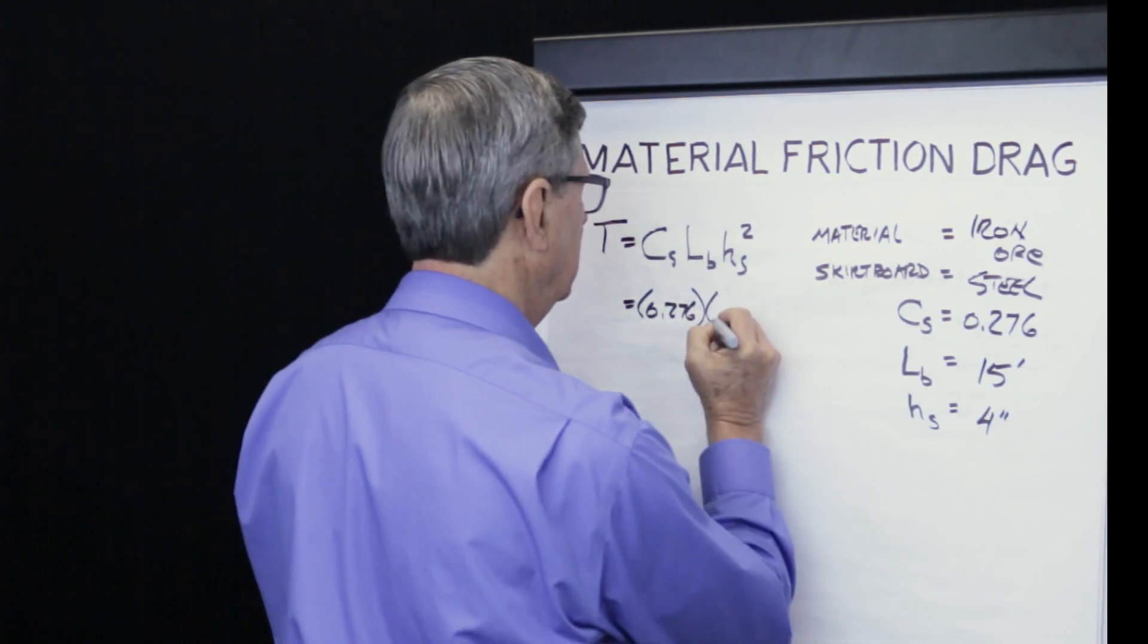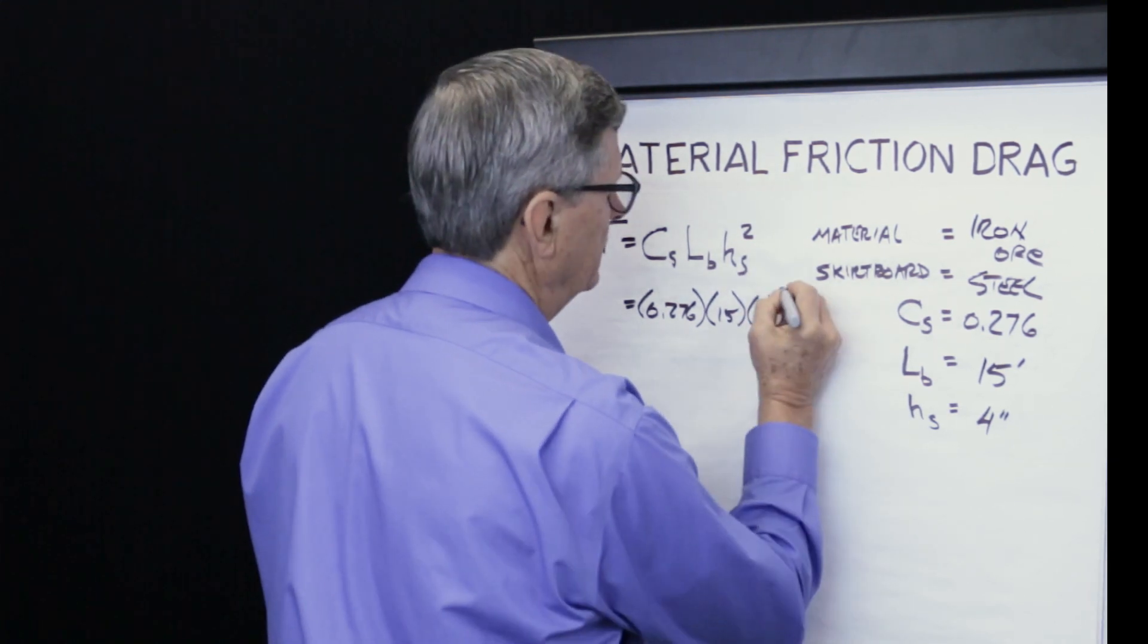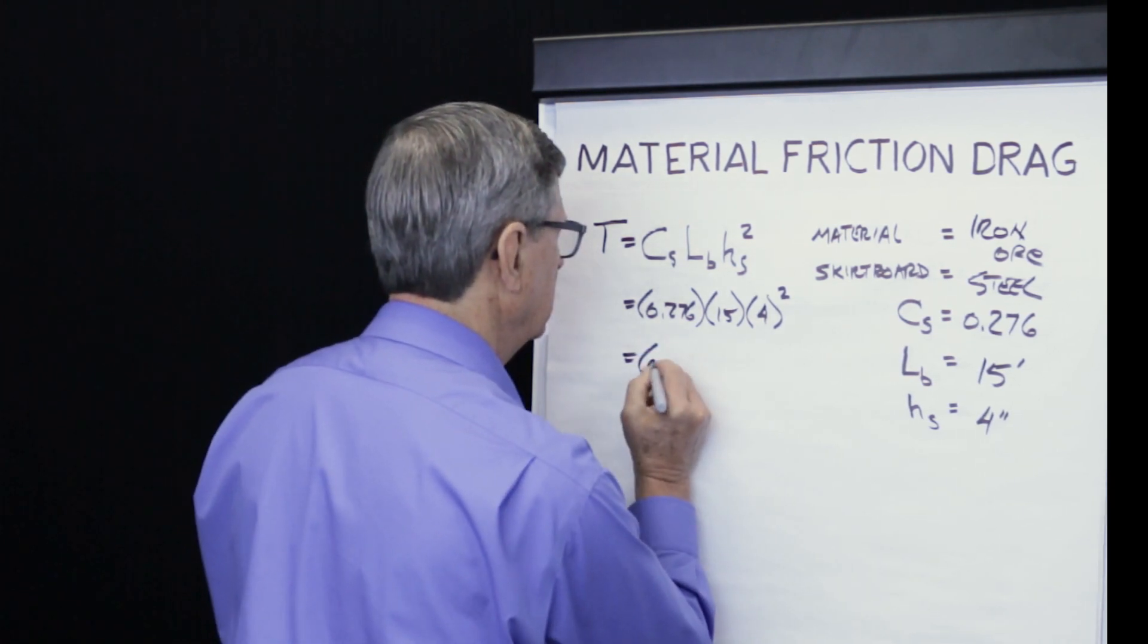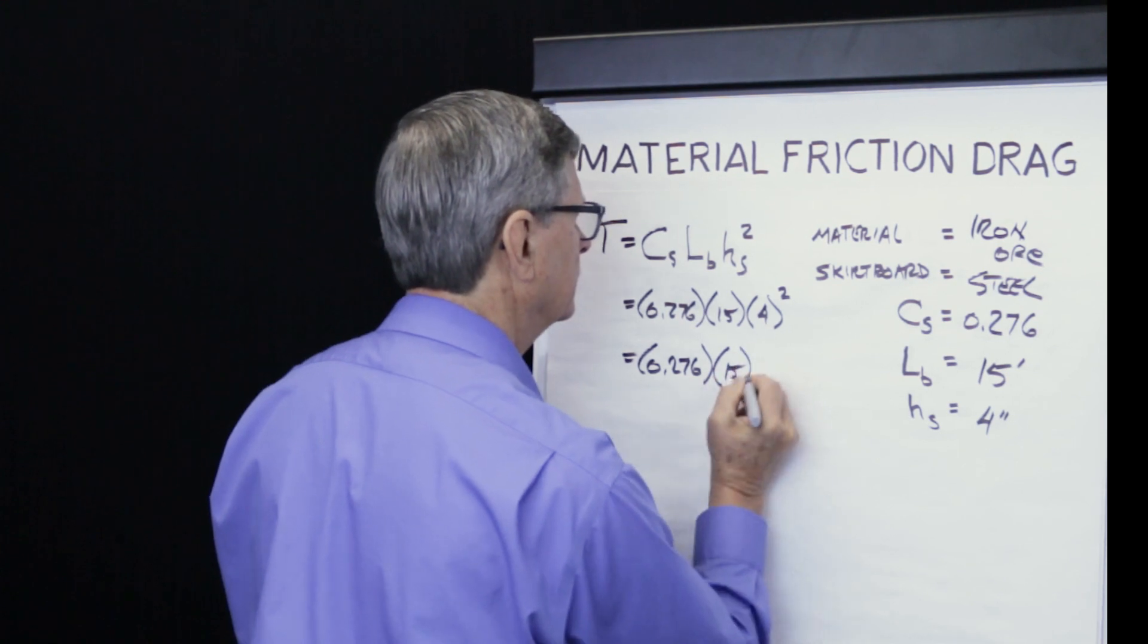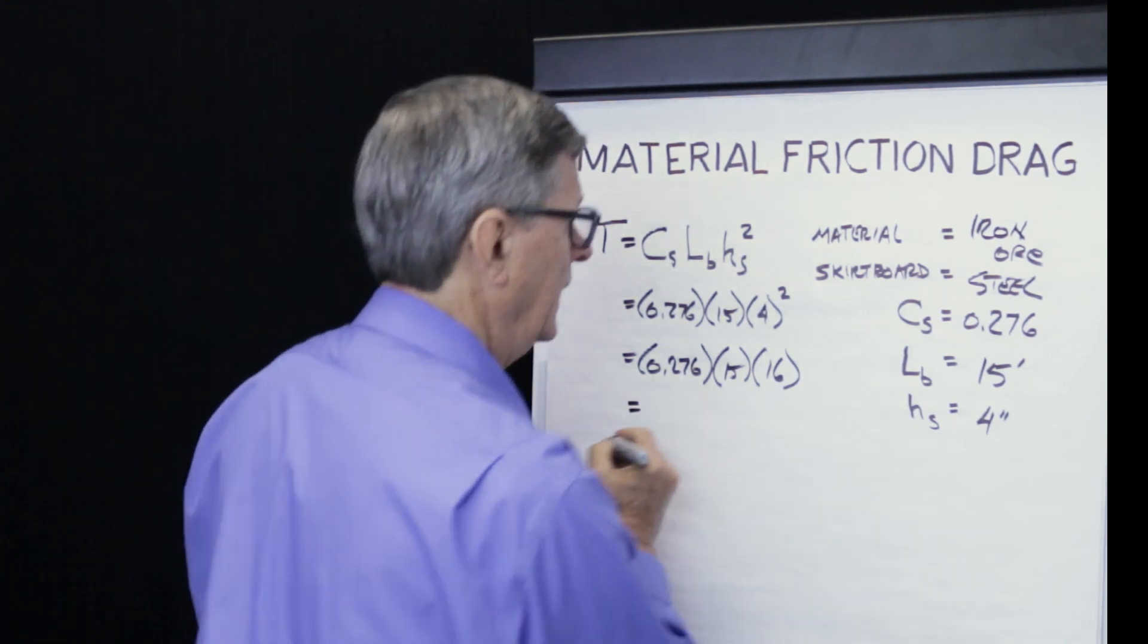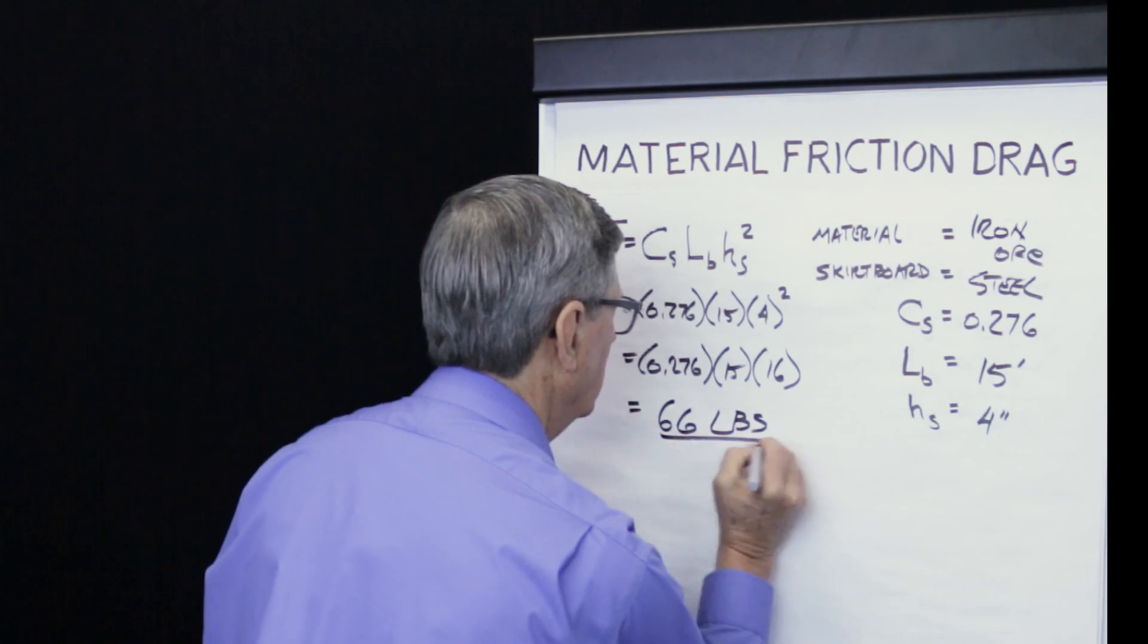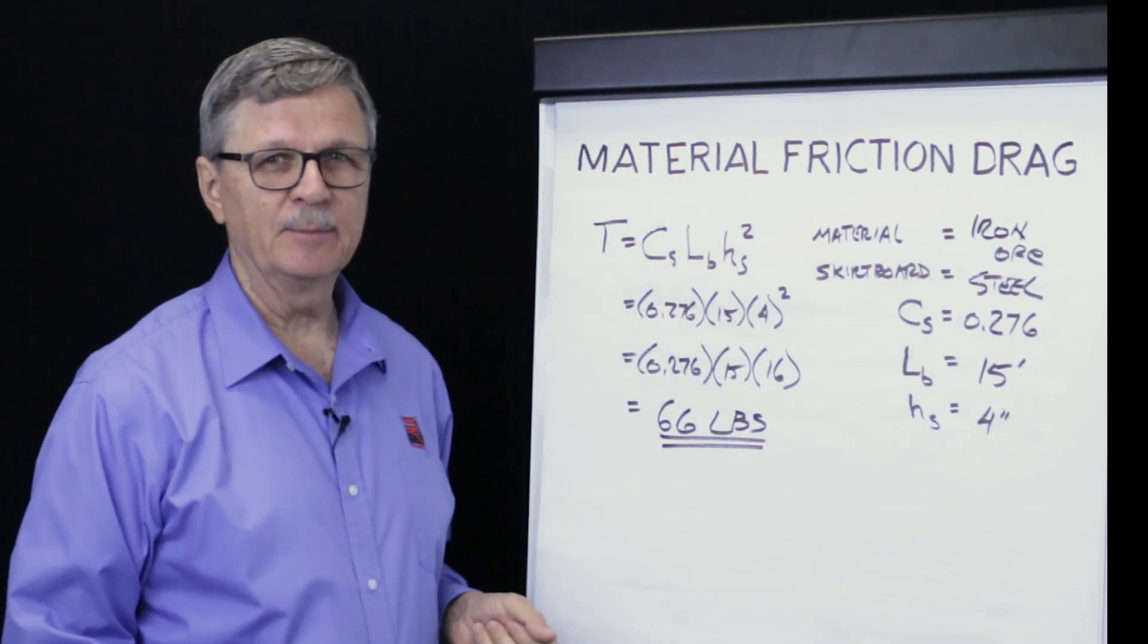Here's how we calculate the drag. 0.276 times 15 for 15 feet long times 4 squared since the depth of material is 4 inches. This gives us 0.276 times 15 times 16 or 66 pounds. We have now calculated the material frictional drag in this particular example.